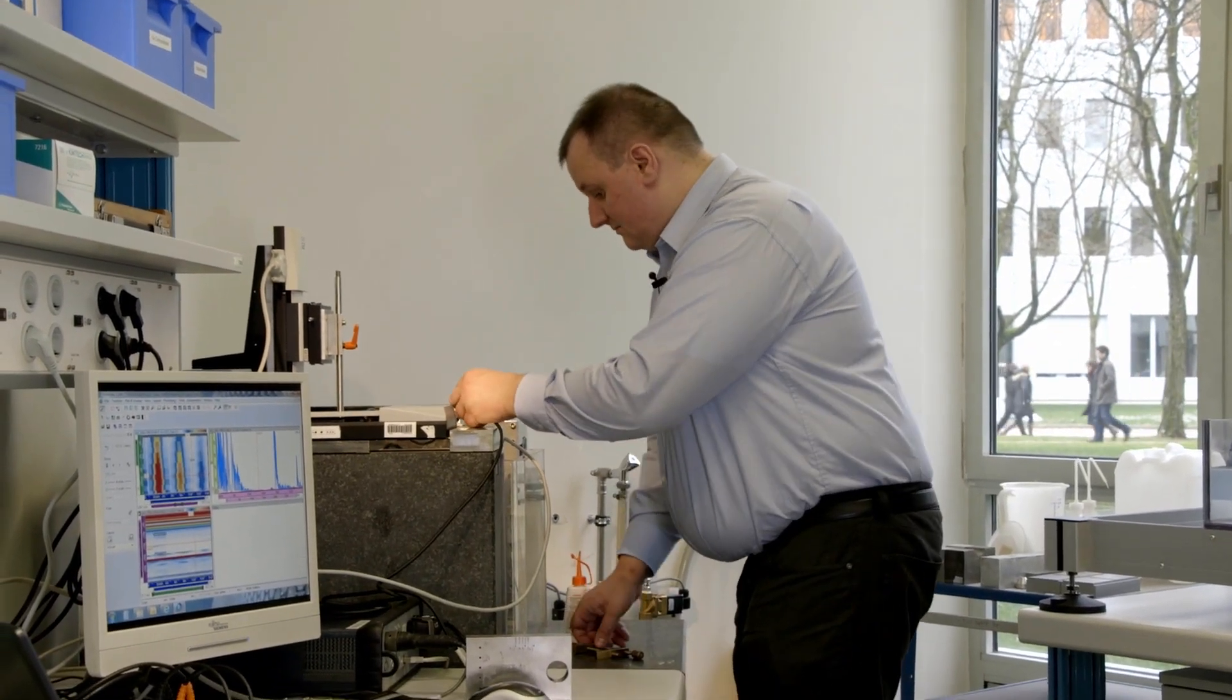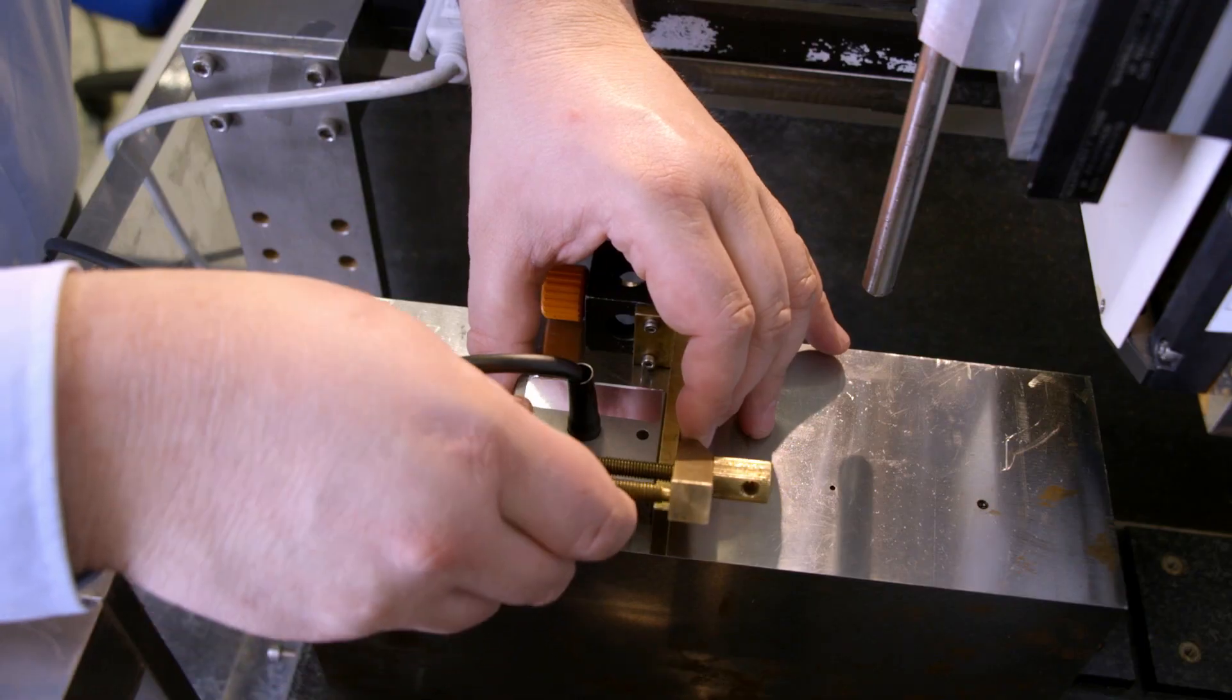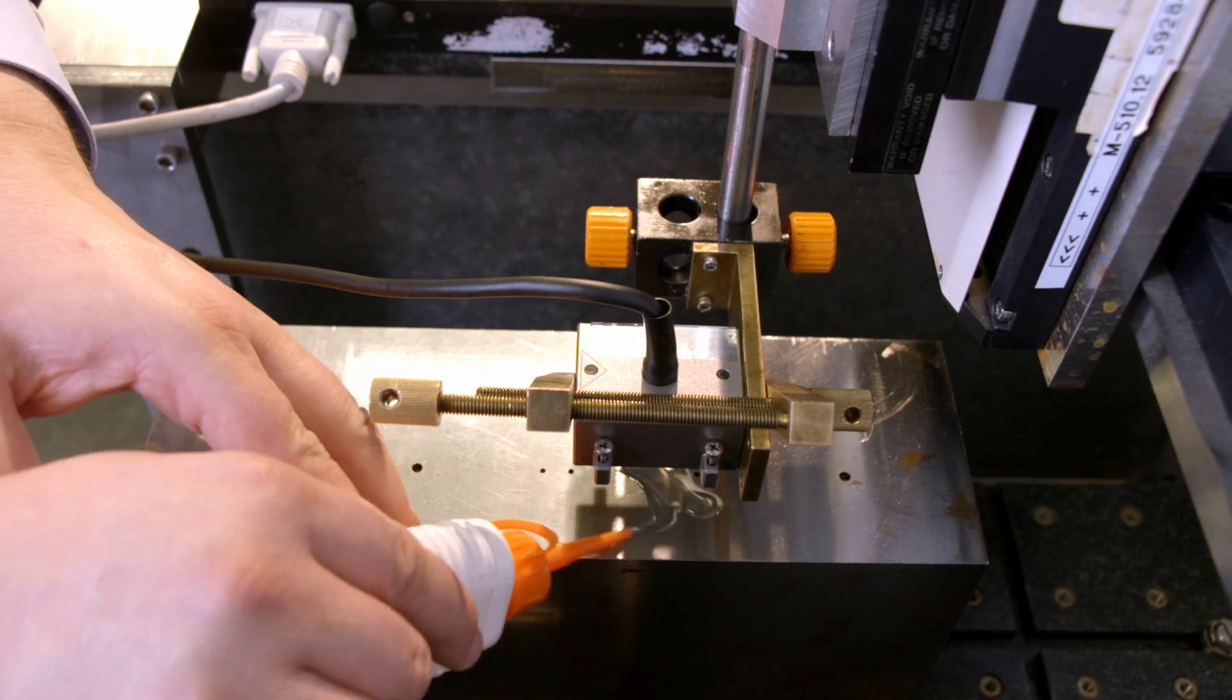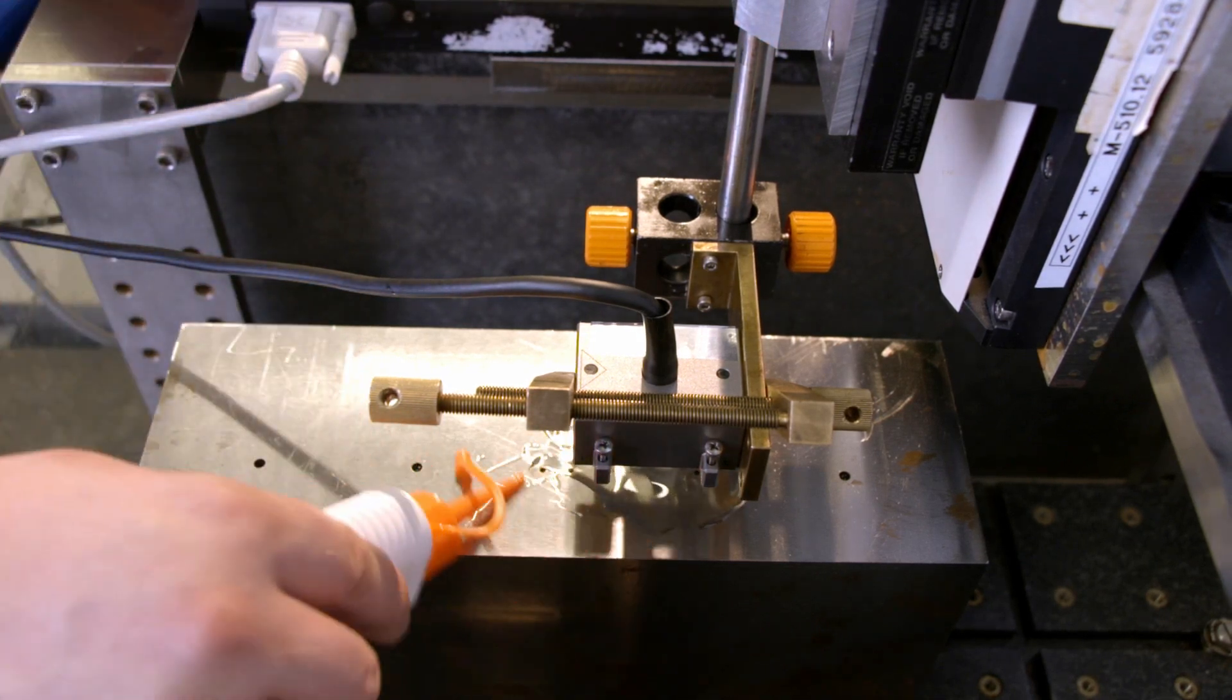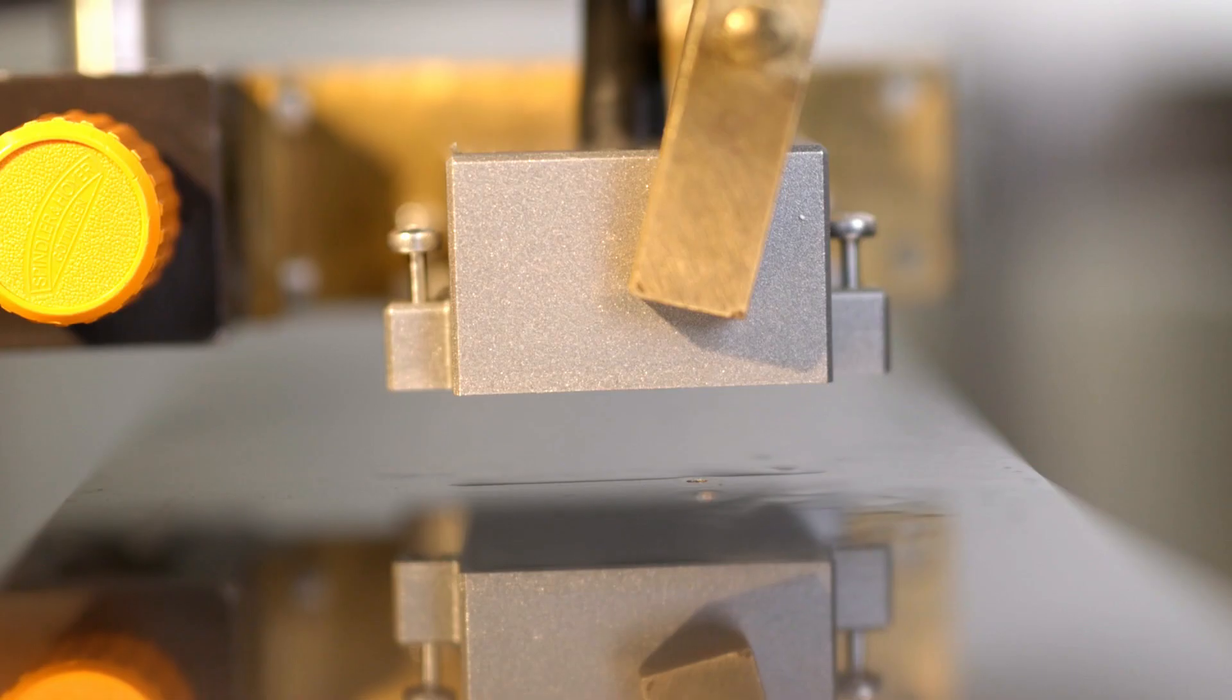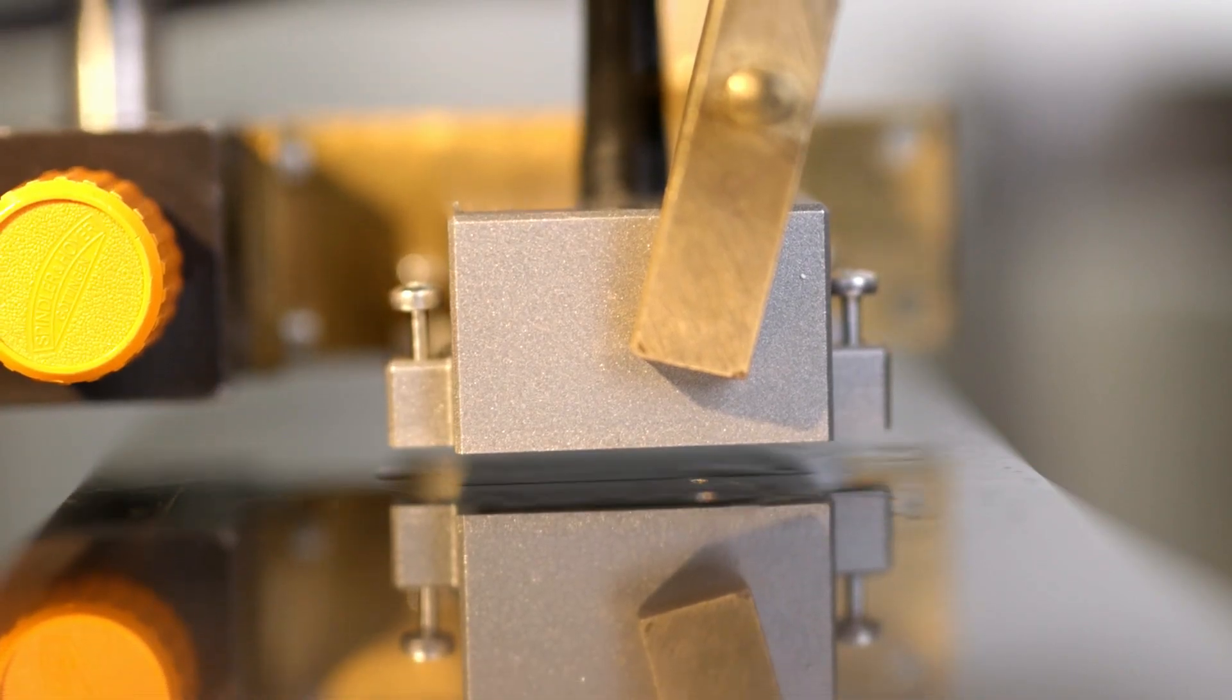We have various reference standards containing defined defects, so we can then compare the results of the measurements with the defects we have introduced. The size of defects we can detect using ultrasound is naturally always dependent on the material. But in general, we can say that defects of 1 mm or even smaller in the large steel parts produced at the forge can reliably be found using ultrasonic testing.